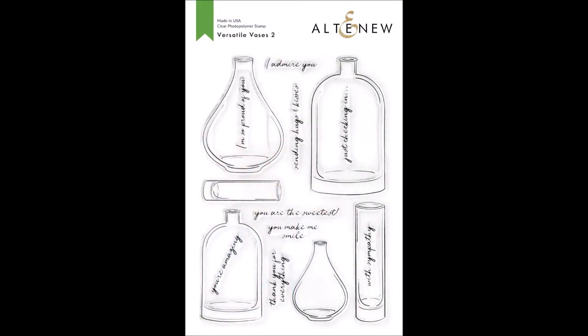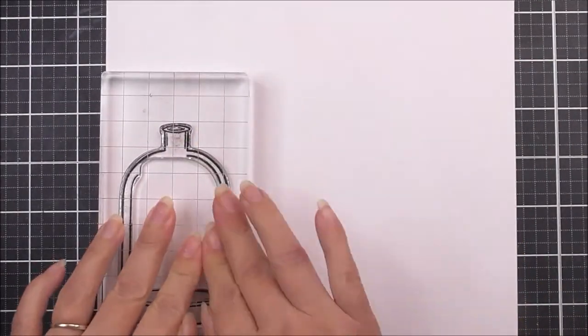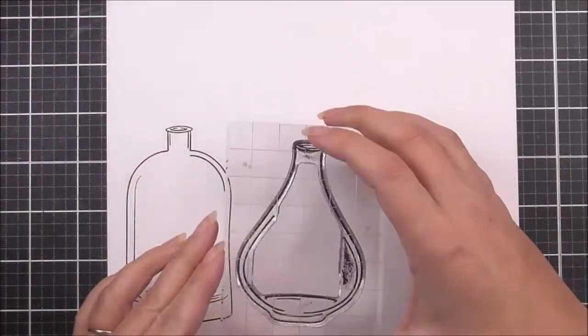Introducing Versatile Vases 2 stamp set from Altenew. This is a 6 by 8 inch clear stamp set containing 15 individual stamps.